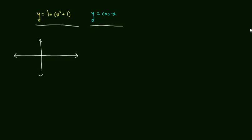The first function, the natural log function, when we graph it, it's going to look something like this locally. It's going to continue to have behavior to the right and left, but I just want to take a look at the graph where these two are bounded. The cosine function will look something like that. These are both even functions, and I should have portrayed a somewhat symmetric region R going from A to B. Let me lightly shade that region.